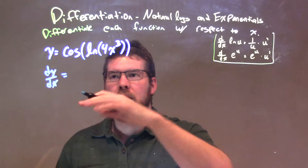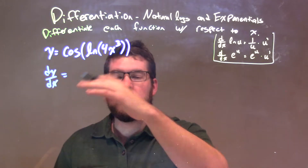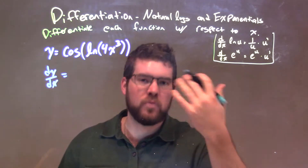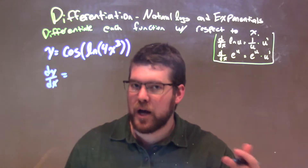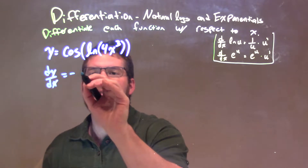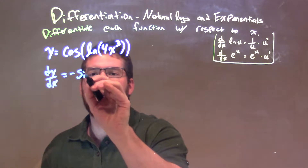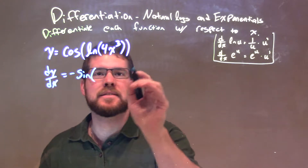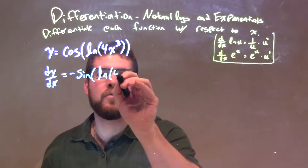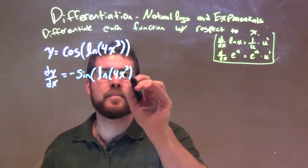Cosine of u is negative sine of u times whatever u prime is going to be. So we have a negative sine now, and we keep the inside the same: natural log of 4x to the third power.